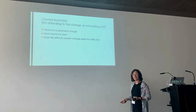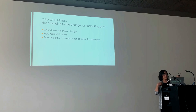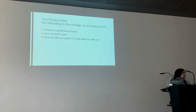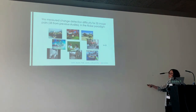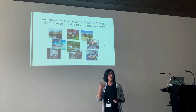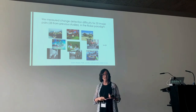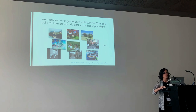Here's how we wanted to get at this question. We're going to have people attend to a peripheral change and measure how hard it is to see those changes off in the periphery, and ask whether that predicts how hard it is to see the change in the usual paradigm. We started by taking change detection pairs from the literature and doing the standard flicker paradigm — image, blank, image, blank — kept on until people notice the change or give up. This gives us a measure of how hard each change detection pair is.